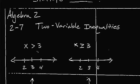Section 2.7 is about two variable inequalities. Let's go back to one variable and just look at what we did in one variable situations.